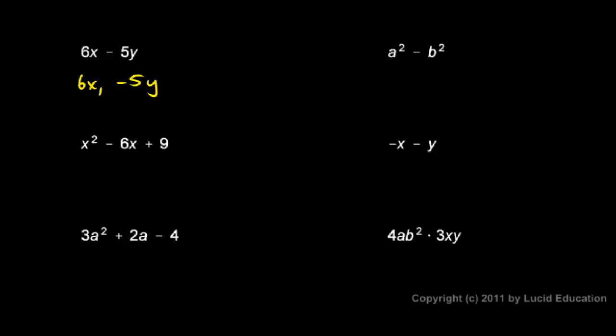Over here, a squared minus b squared. There are two terms, and they are a squared and negative b squared.